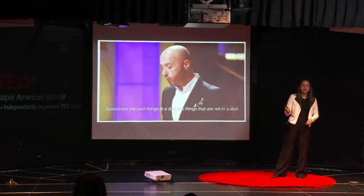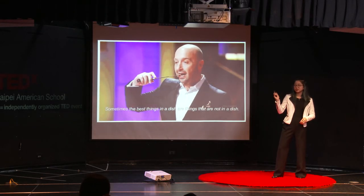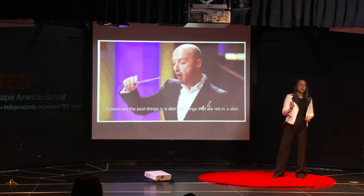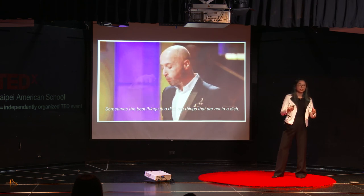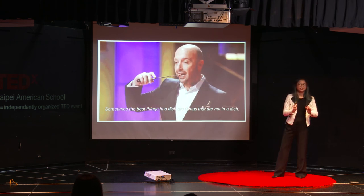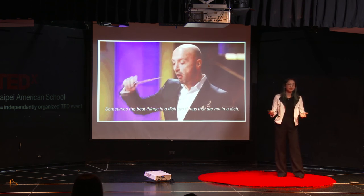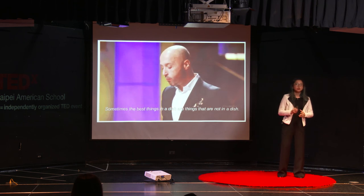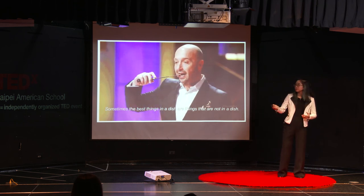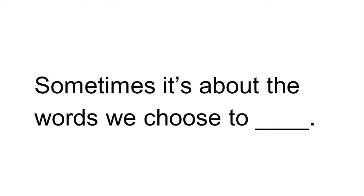A few years ago, I saw an episode of MasterChef, and Joe Bastianich, who's one of the judges, said, sometimes the best things in a dish are things that are not in a dish. The first few times I heard that, I thought it made absolutely no sense. But in the context of language, it often makes sense. Sometimes it's not so much about what we say or what we write. Sometimes it's about what we choose to omit.